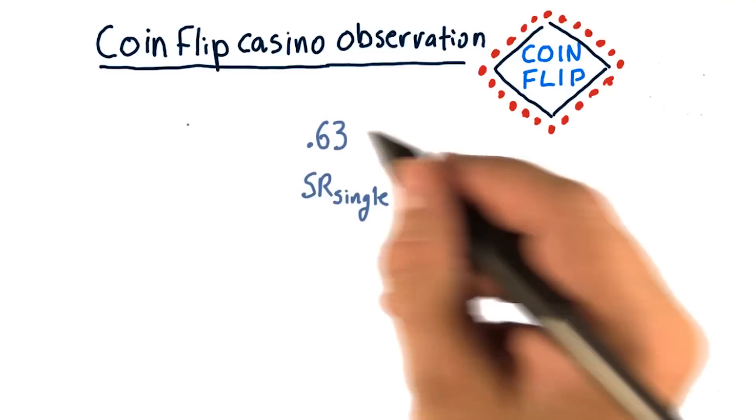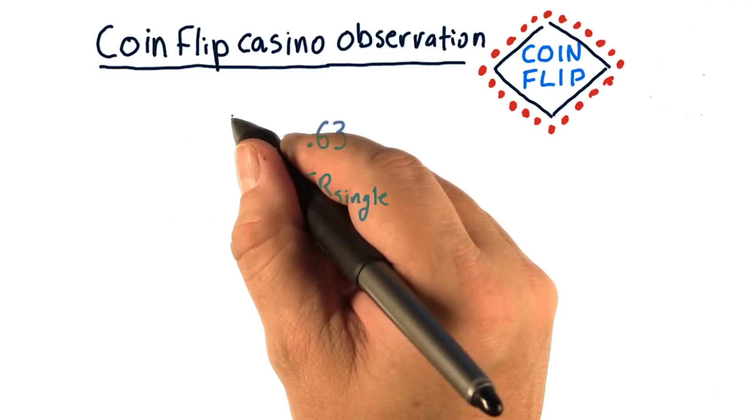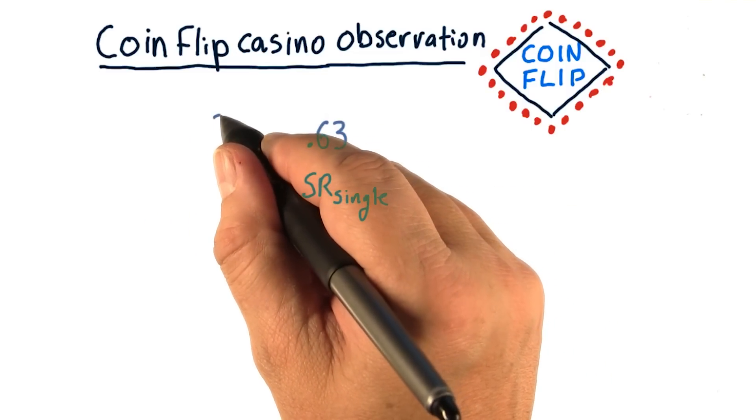Now the Sharpe ratio if we bet 1,000 times, in other words one chip on each of 1,000 tables, turns out to be 20.